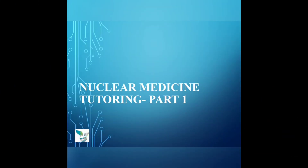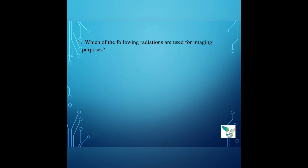Here we begin Part 1, tutoring of nuclear medicine. Moving on to the first question: which of the following radiations are used for imaging purposes? Option A: alpha. Option B: beta. Option C: gamma. Option D: delta. The answer is Option C, gamma.